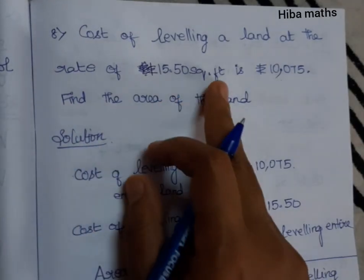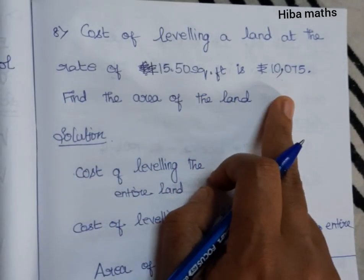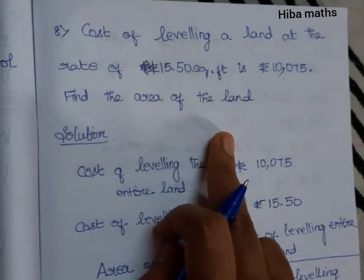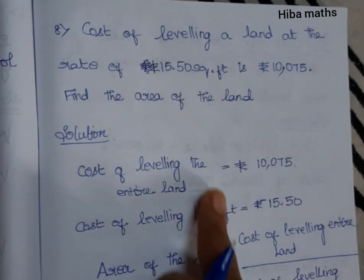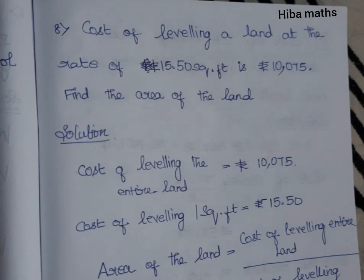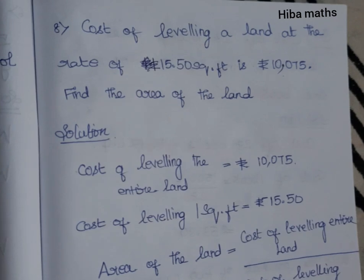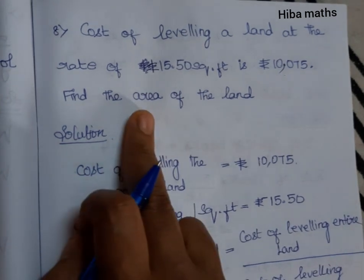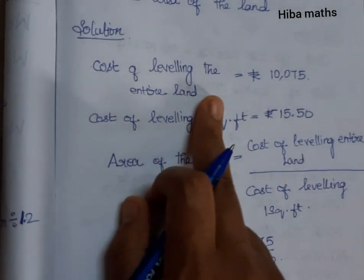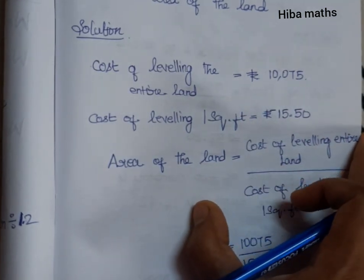Eighth question. Cost of leveling a land at the rate of Rs. 50.50 per square feet is Rs. 10,075. Find the area of the land. The total cost of leveling the entire land is Rs. 10,075.